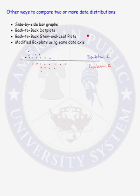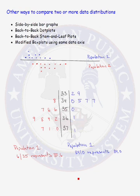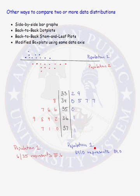We could also use back-to-back stem and leaf plots. An example is given here, where population one data goes to the right of the stems and population two data goes to the left of the stems. You need two keys when you have back-to-back stem and leaf plots. For population one, '34 | 0' represents 34.0, and '6 | 35' represents 35.6.